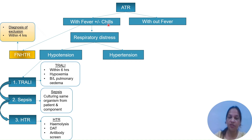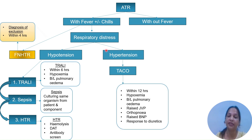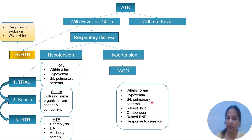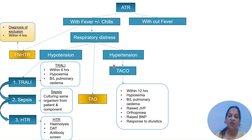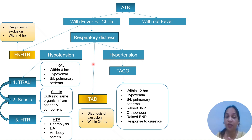If the acute transfusion reaction presents with fever and respiratory problem but with hypertension instead of hypotension, that can be transfusion-associated circulatory overload (TACO). The time period is within 12 hours of transfusion; the patient will present with hypoxemia, bilateral pulmonary edema on X-ray, raised JVP, orthopnea, raised BNP, and will respond well to diuretics. There can be confusion between TRALI and TACO, so we differentiate based on these signs. If there is respiratory distress within 24 hours but no BP change and no bilateral pulmonary edema, it can be transfusion-associated dyspnea — also a diagnosis of exclusion.